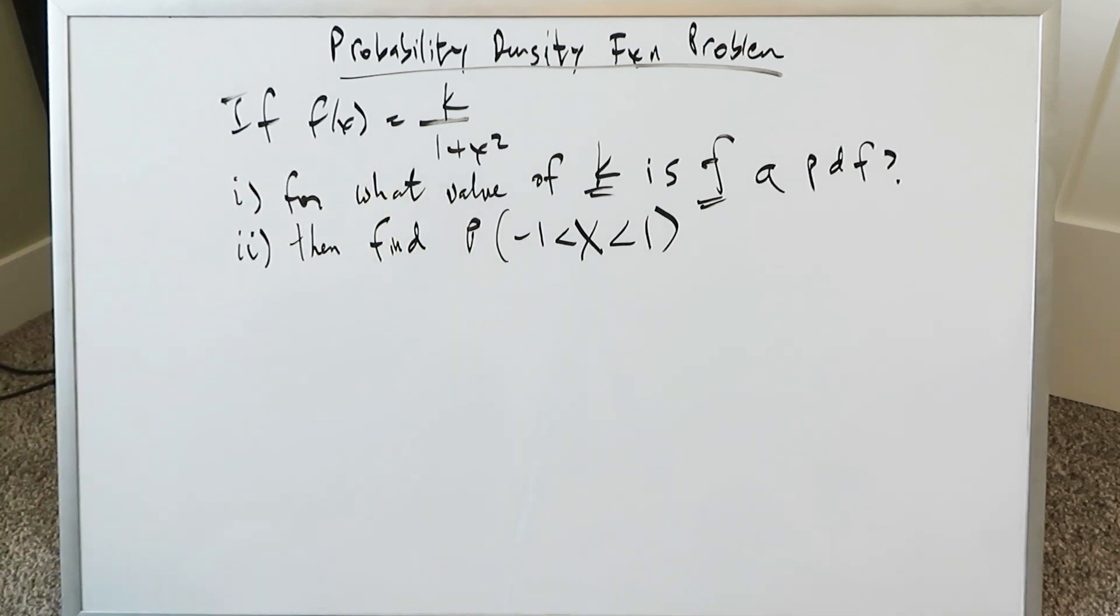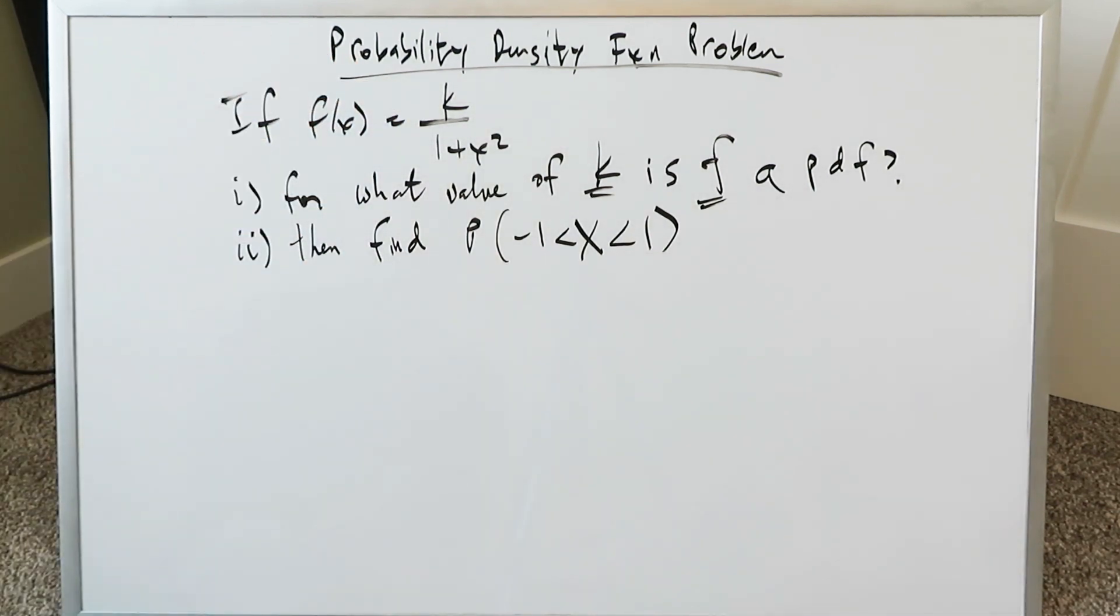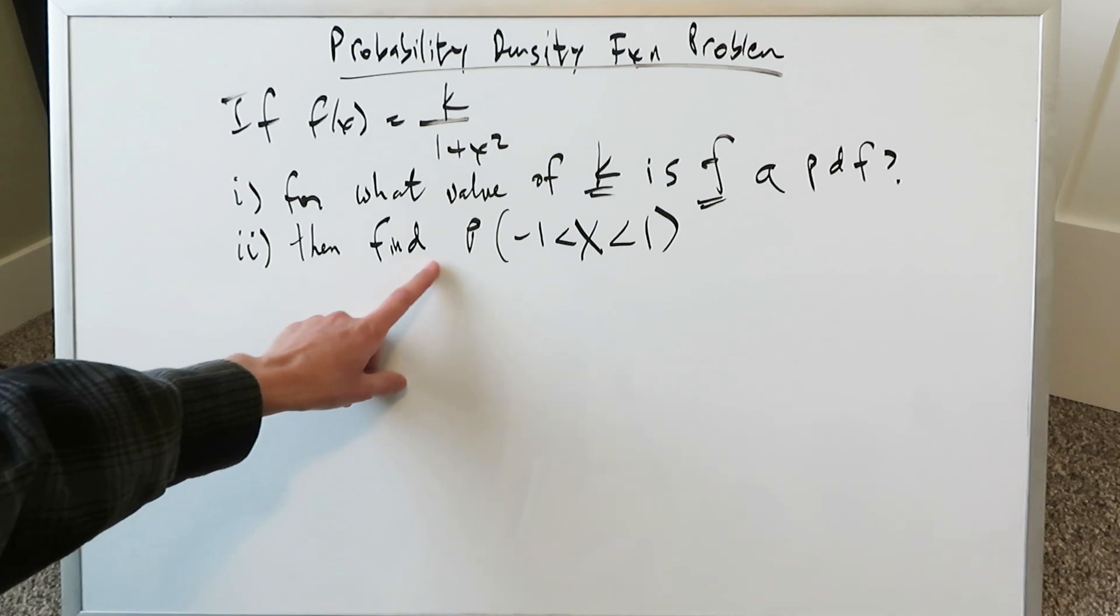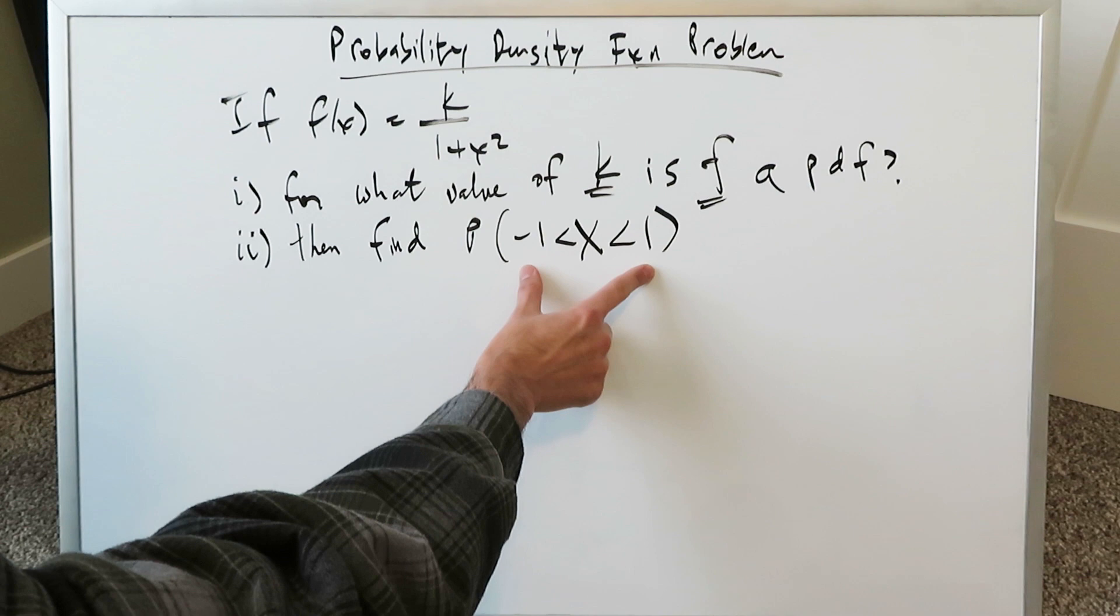We have this function which is given k divided by 1 plus x squared. In the first part of the question, we have to determine for that given function, for what value of this k, some constant or coefficient k, will this function become a probability density function, pdf. Then the second part, we have to find the probability that your continuous random variable falls between -1 and 1.